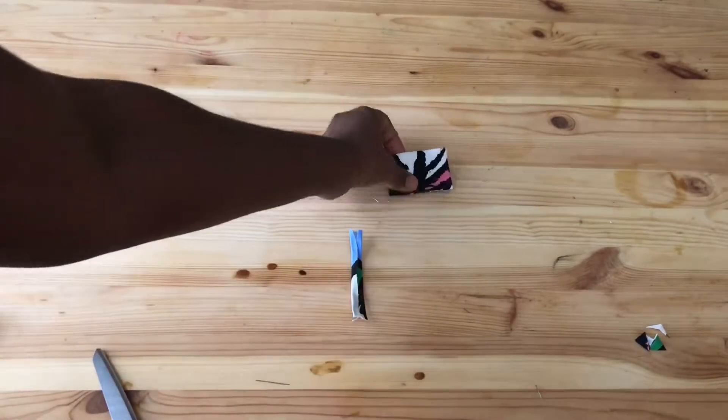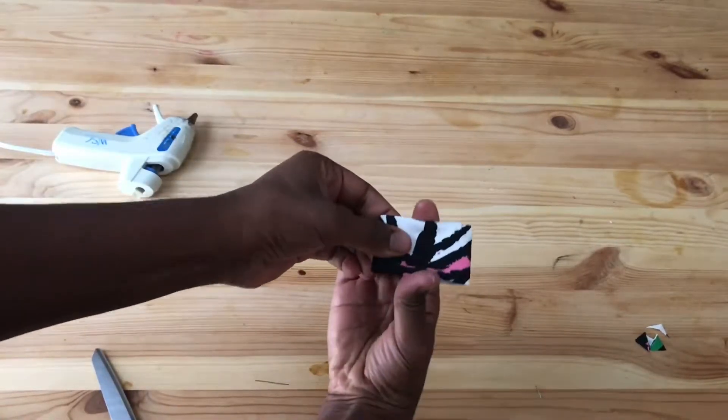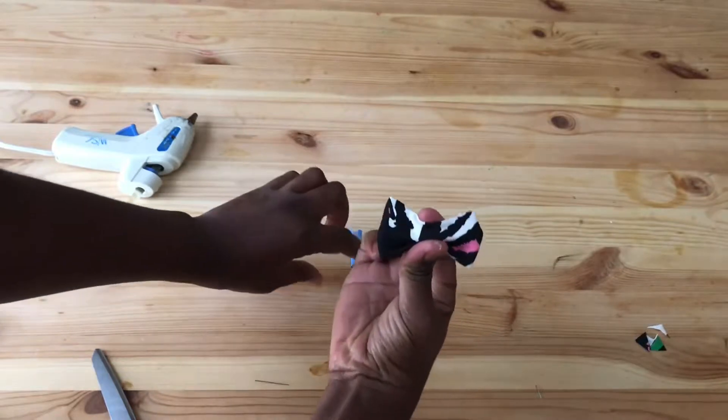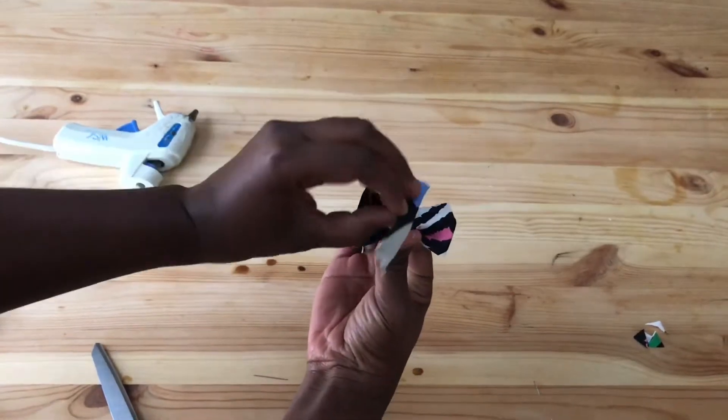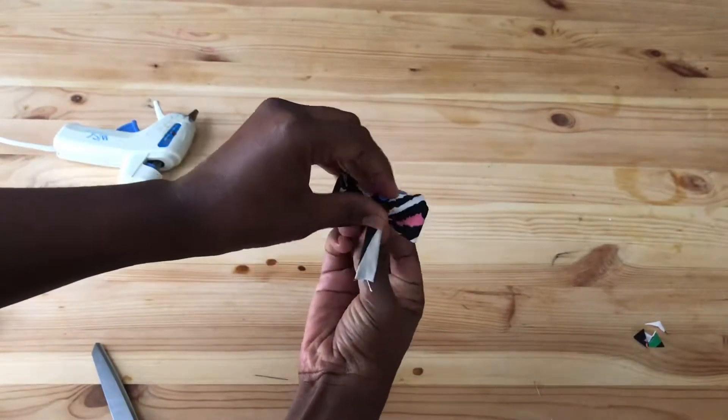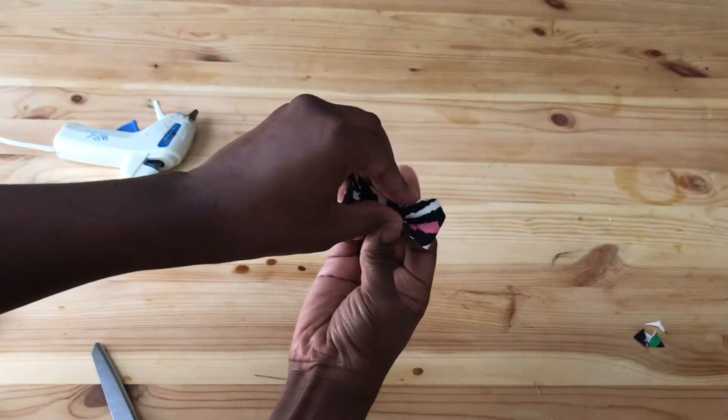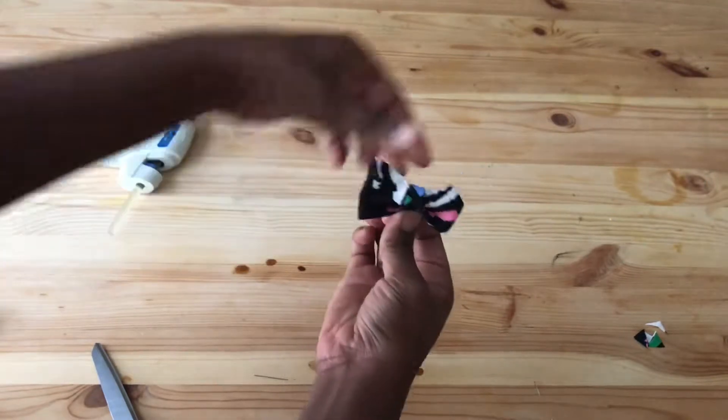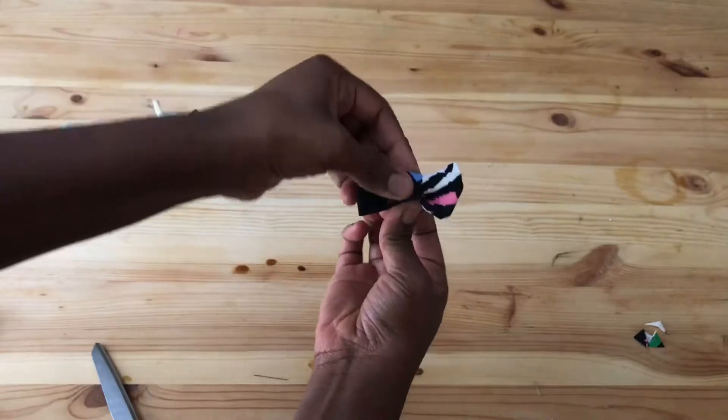So we have our piece, and so we take our bow and we squeeze it in the middle and we wrap our small piece around it. So now it's really starting to look like a bow, and we kind of smooth it out so that it looks like an amazing piece.